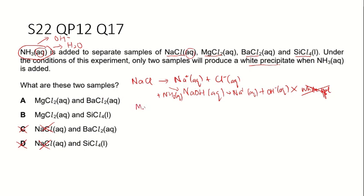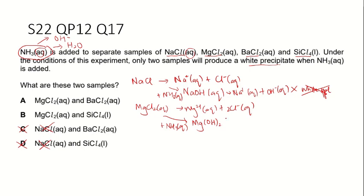Magnesium chloride solution contains magnesium ions and chloride ions. When ammonia is added, the magnesium ion will react with hydroxide ions and form magnesium hydroxide, which is a white precipitate. In Group 2, the solubility of hydroxides increases going down the group. Since magnesium is at the top of the group, it doesn't dissolve in water well, so it forms a white precipitate.